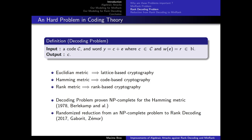This problem yields different kinds of cryptography depending on the metric one chooses. With the Euclidean metric, for instance, it yields to lattice-based cryptography, and with the rank metric — the one we're going to focus on today — it yields to rank-based cryptography. This problem for the Euclidean metric has been proven NP-complete in 1978, and a randomized reduction from an NP-complete problem was given for the rank metric in 2017.